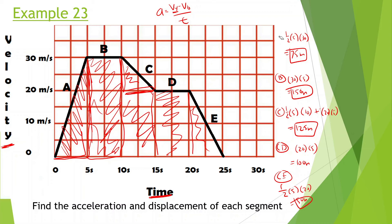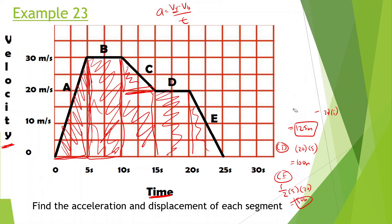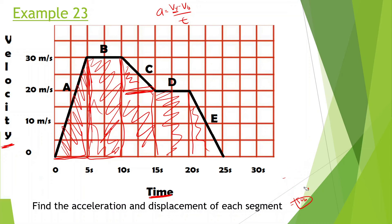So for velocity versus time graphs: the area under the curve gives you the displacement, and the slope of the curve gives you the acceleration.